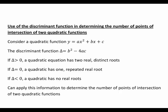If the discriminant is greater than zero, a quadratic equation has two real distinct roots. If delta equals zero, it has one real repeated root. If delta is less than zero, a quadratic has no real roots.